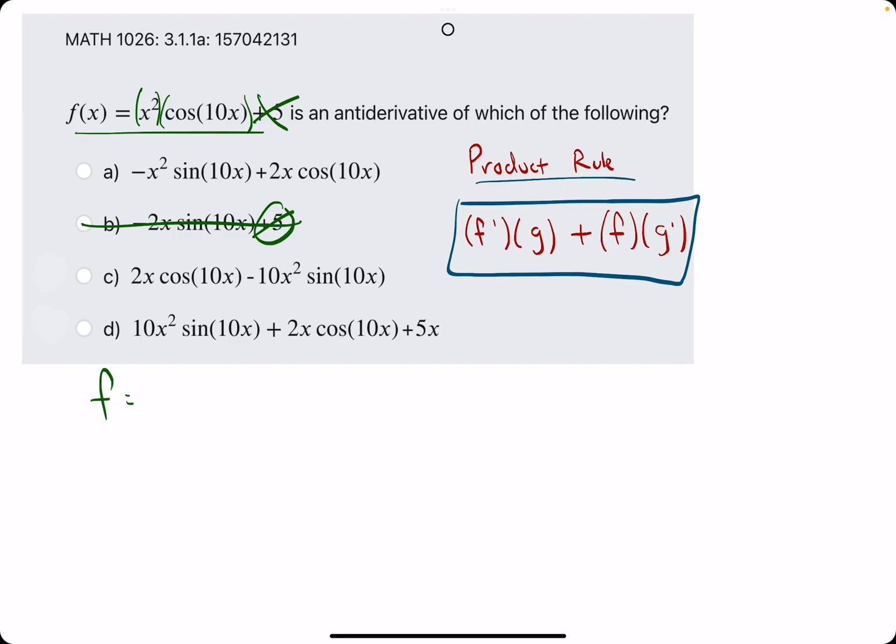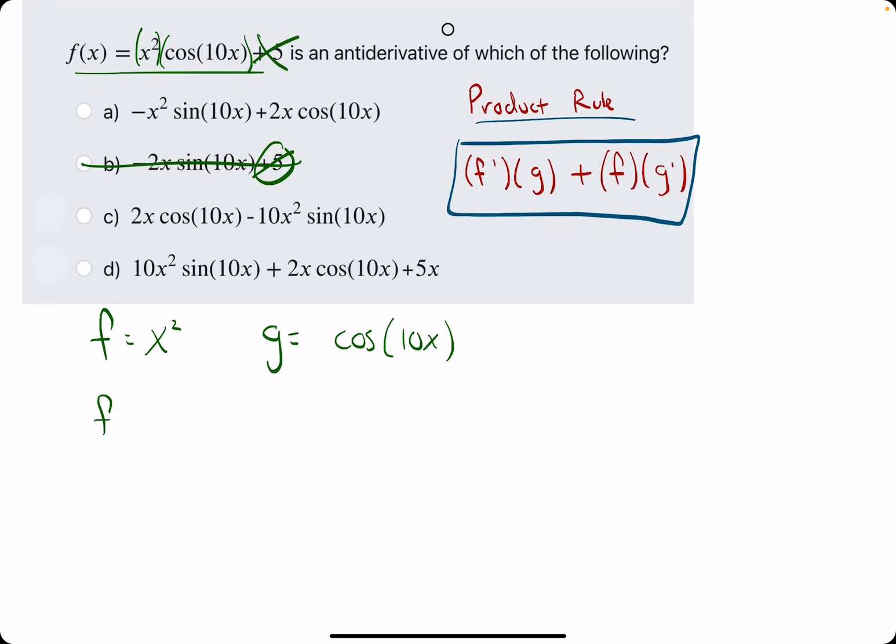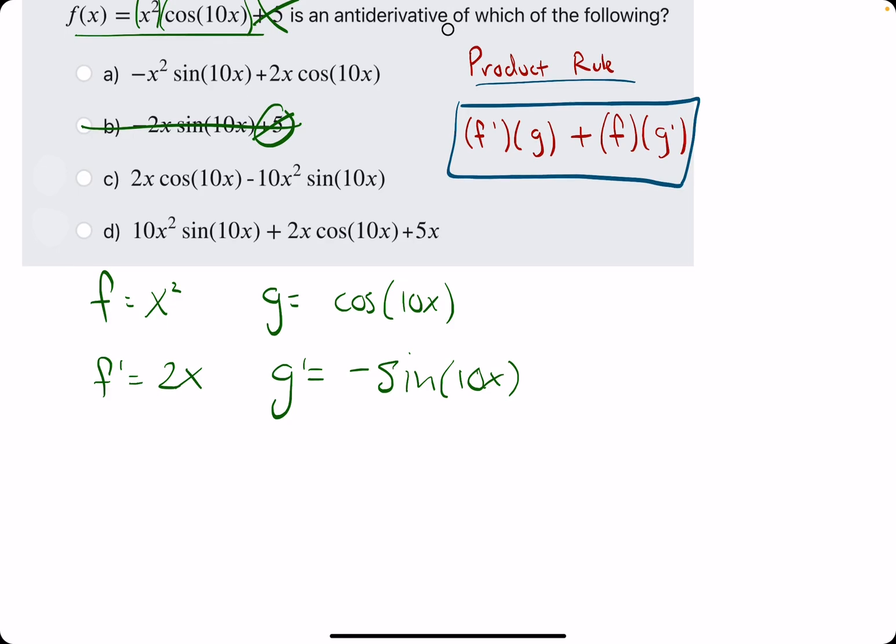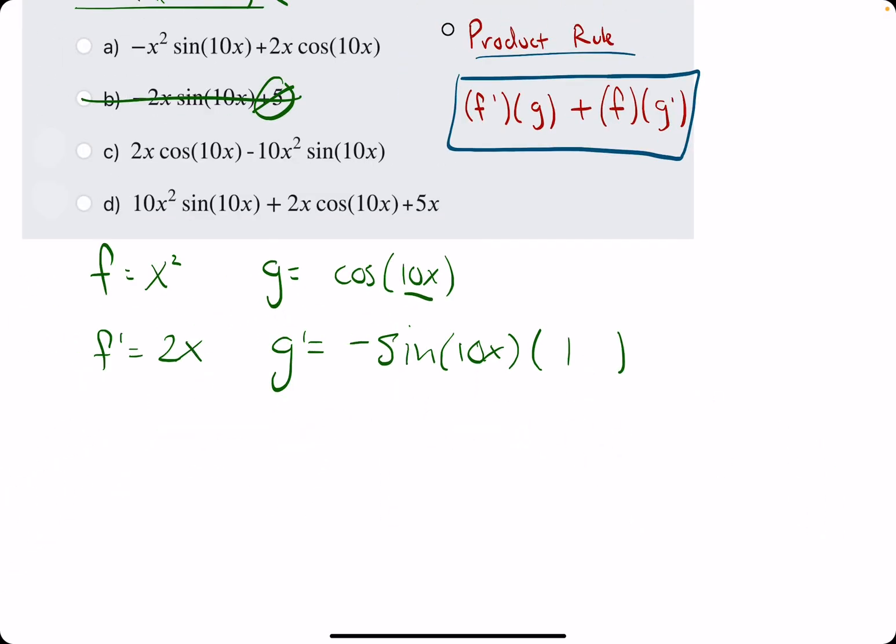We will call f the first piece x squared. We'll call g the second piece cosine of 10x. We will find their individual derivatives, so x squared goes to 2x. Cosine of 10x, let's start with cosine. Cosine has a derivative of negative sine of whatever's on the inside, so the inside parenthesis stays the same. And then we multiply this by the derivative of the inside. The derivative of 10x is just 10. The derivative of any constant times x is just that constant.